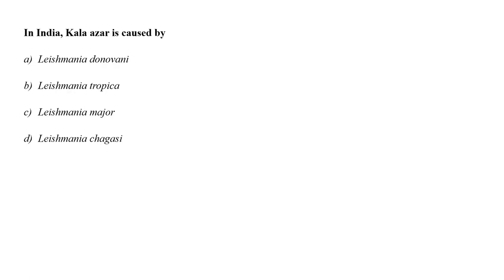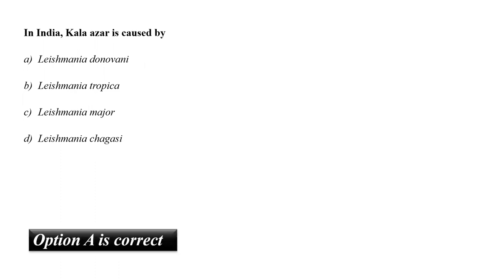In India, Kala-azar is caused by A. Leishmania donovani, B. Leishmania tropica, C. Leishmania major, or D. Leishmania chagasi? Kala-azar, also called black fever, is caused by infection of Leishmania parasites. Visceral leishmaniasis is spread by sandfly bites and affects internal organs — usually the spleen, liver and bone marrow. In India, only one species, Leishmania donovani, primarily infects individuals and attacks the reticuloendothelial system. So the correct answer is option A.